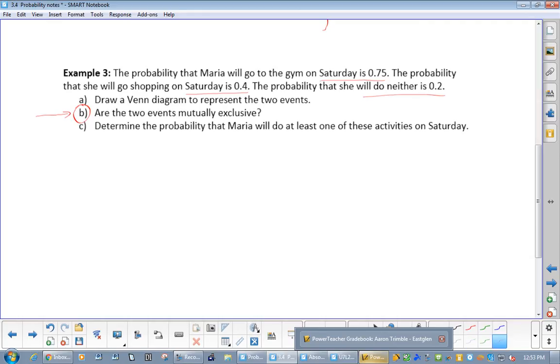If we go 0.75 plus 0.4 plus 0.2, this is not equal 1. If it was mutually exclusive, they will equal 1. If not, there is an overlap. In this case 1, 100% or 1. So, good question.